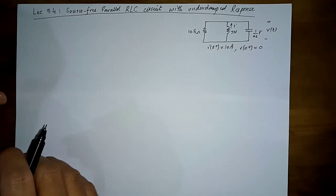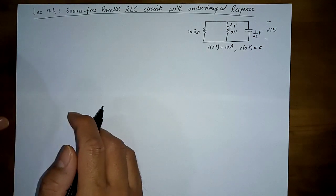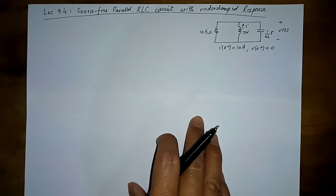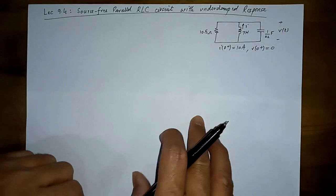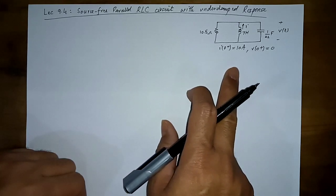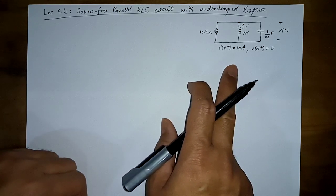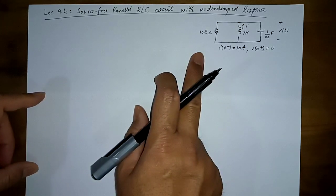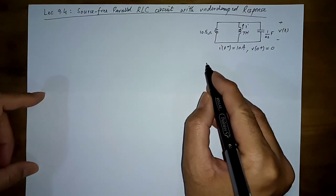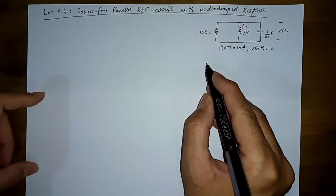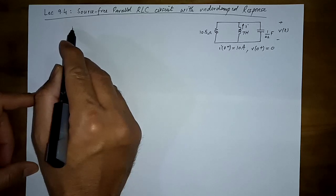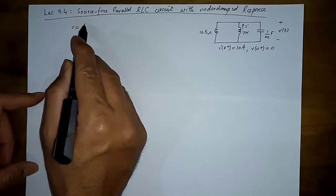We now come to the under-damped response. In the under-damped response, we have changed the value of the resistance to achieve an under-damped response. The rest of the circuit and initial conditions are exactly the same. We have increased the resistance so that the response ultimately becomes an under-damped one.